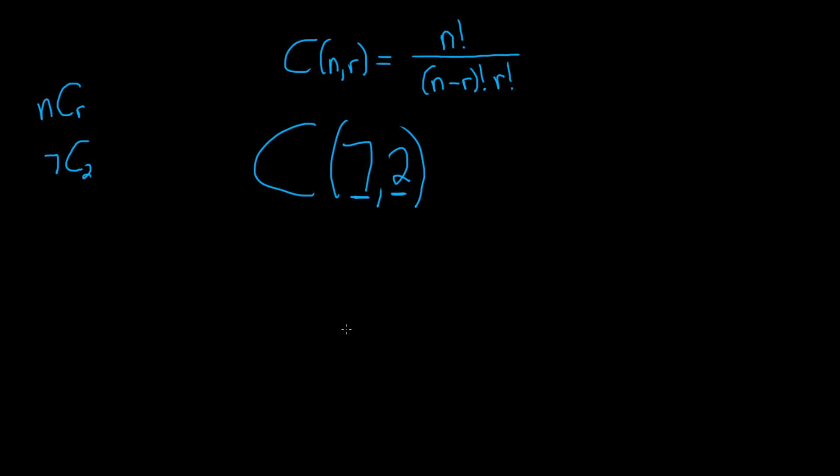In our problem, n is 7 and r is 2. So this equals 7 factorial over (7 minus 2) factorial times 2 factorial.